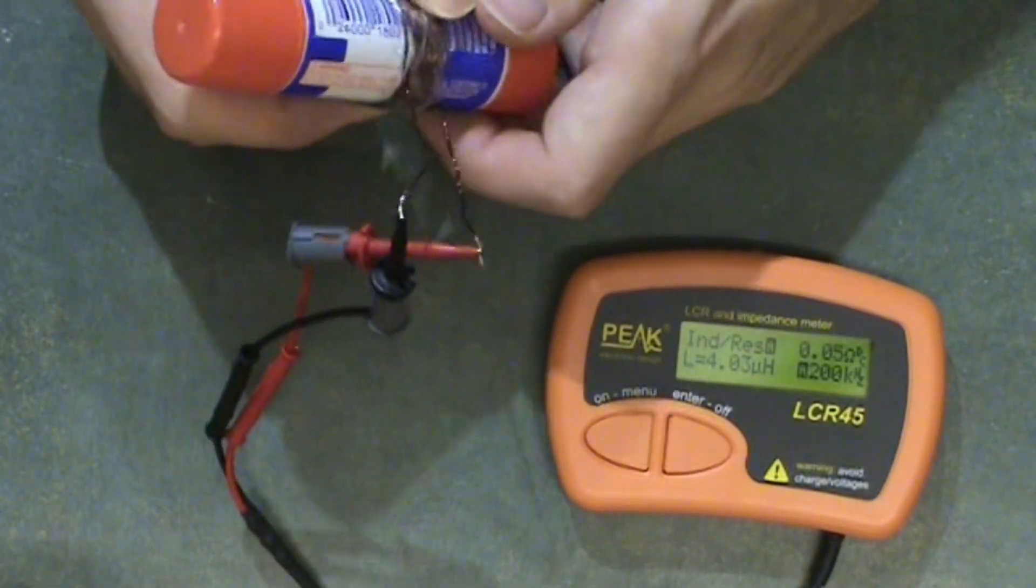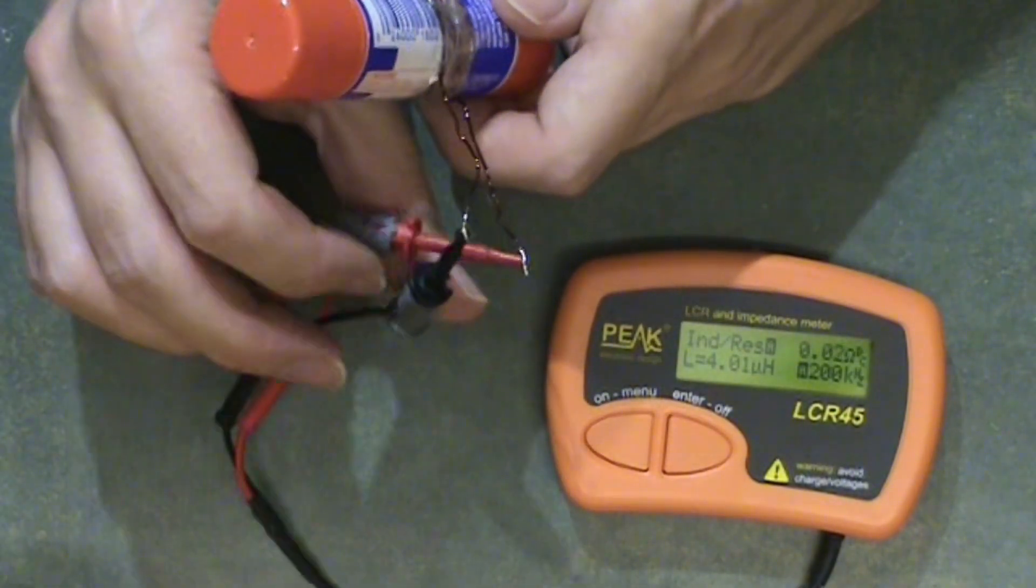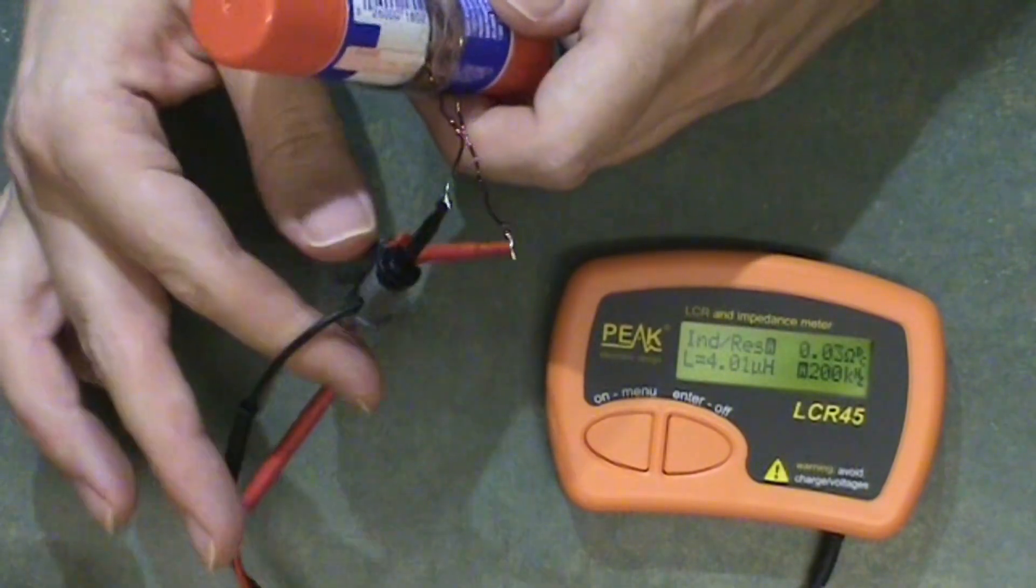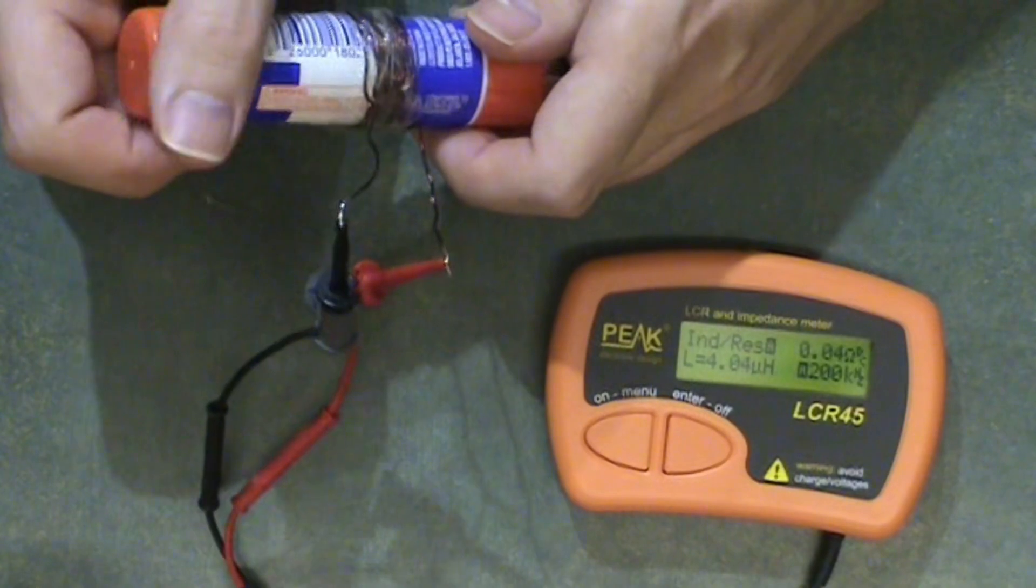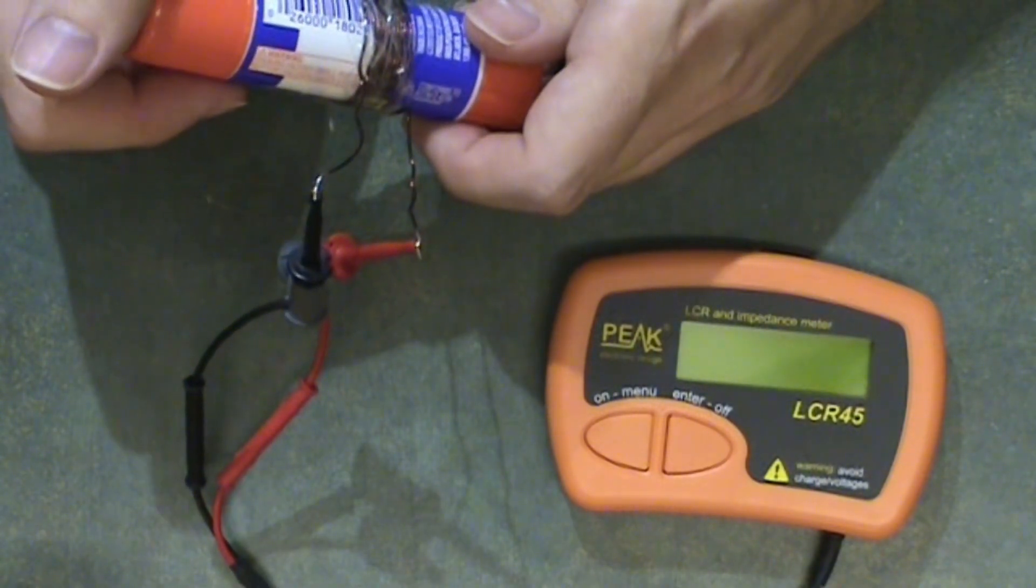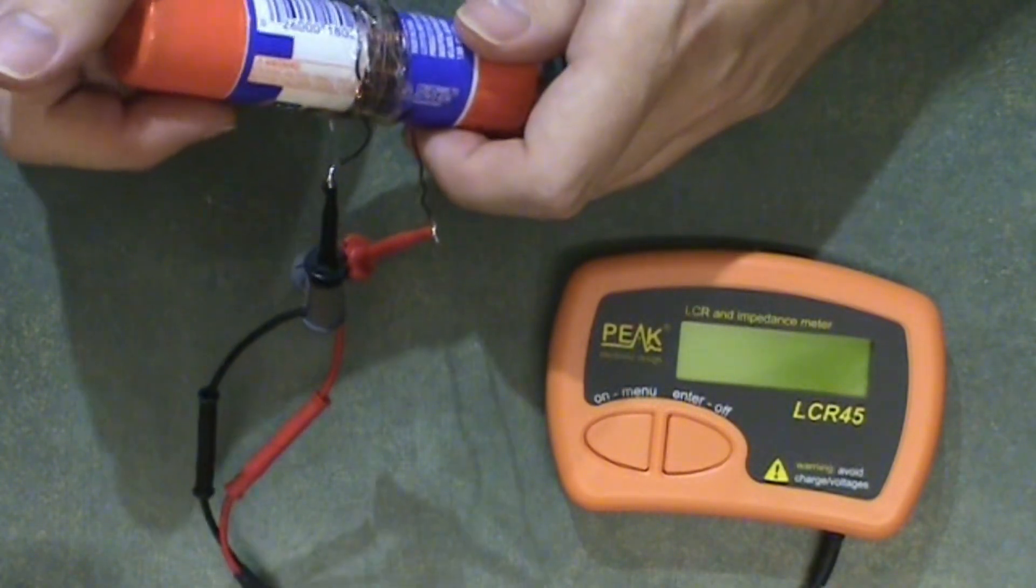And earlier I had it, for some reason I don't know if it's because these are crossed or what, but it was going up as high as 4.5. The low end would be 3.6 and the high end would be 4.5 micro henry.